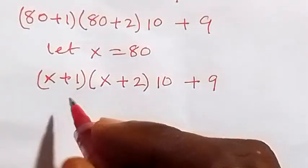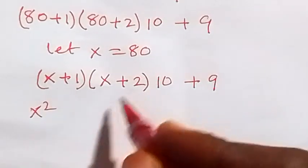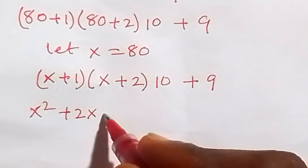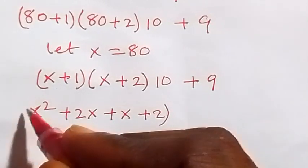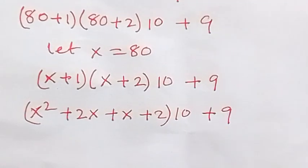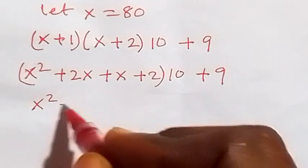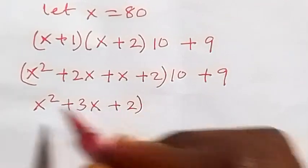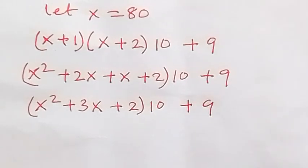In the next step we can expand the bracket: x times x is x squared, x times 2 is plus 2x, 1 times x is plus x, 1 times 2 is plus 2, then multiplied by 10, plus 9. This simplifies to x squared plus 3x plus 2, multiplied by 10, plus 9.